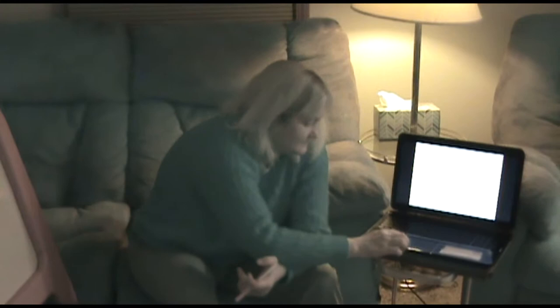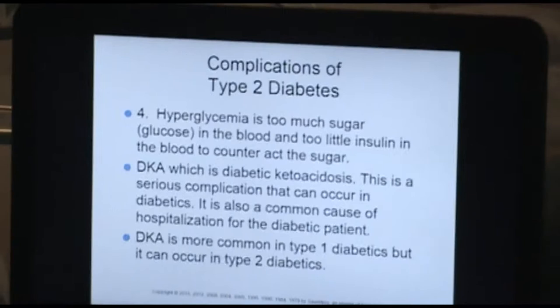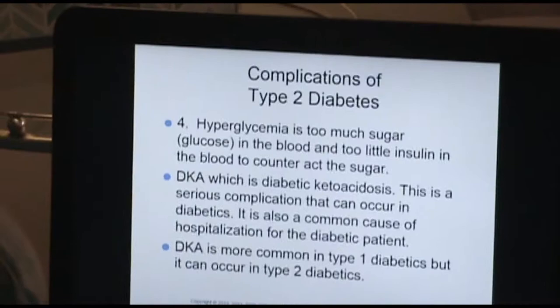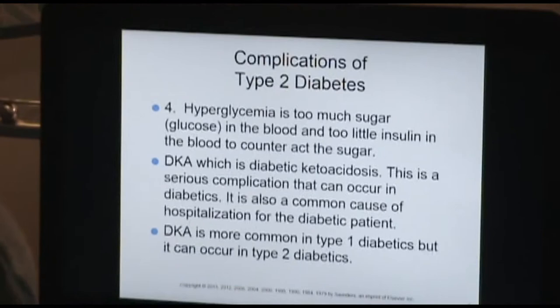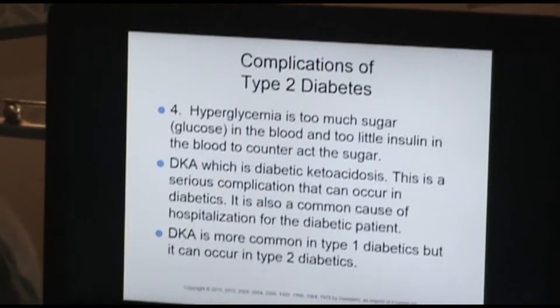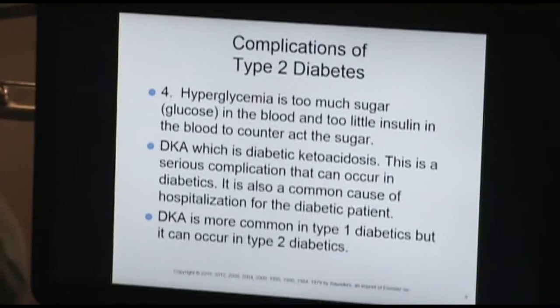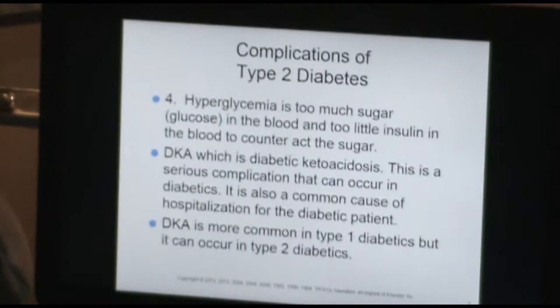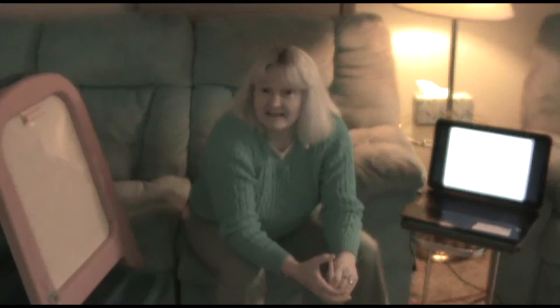The fourth complication is hyperglycemia. Hyperglycemia is basically what diabetes is — it's how it's diagnosed. Hyperglycemia is too much sugar or glucose in the blood and not enough insulin to counteract that sugar. DKA, which is diabetic ketoacidosis, is a serious complication that can occur and is a common cause of hospitalizations for diabetic patients. DKA is more commonly seen in patients with type 1 diabetes but it can occur in patients with type 2.